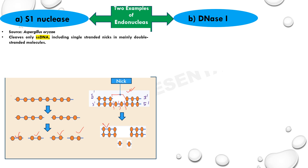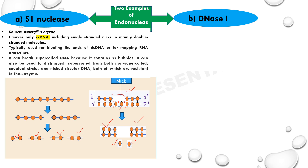This enzyme is typically used for blunting the ends of double-stranded DNA or for mapping RNA transcripts. It digests supercoiled plasmids primarily in regions containing inverted repeats, which generally occur in origins of replication. In these regions, the DNA adopts a cruciform structure that S1-nuclease recognizes as single-stranded and clips it.